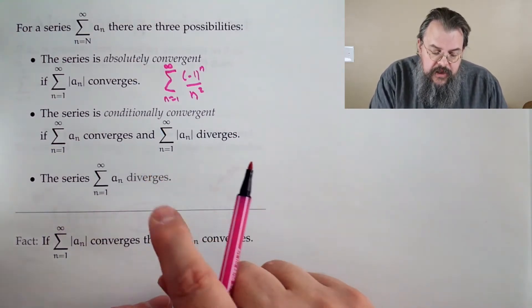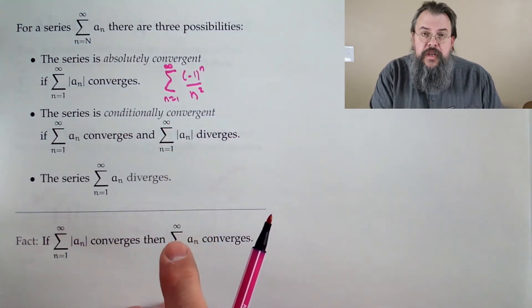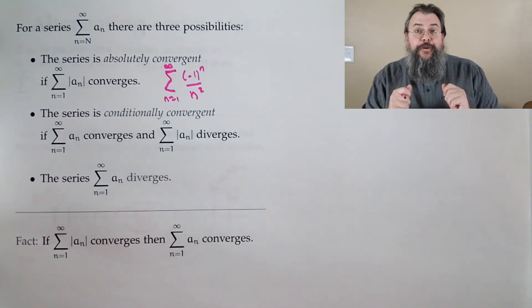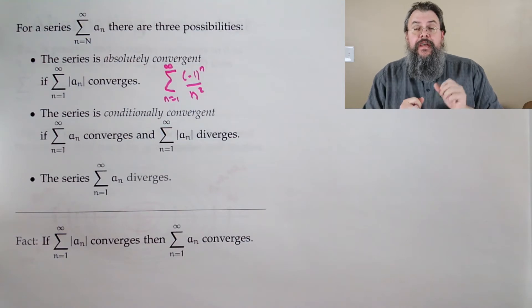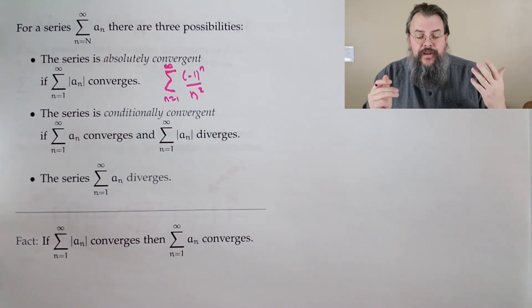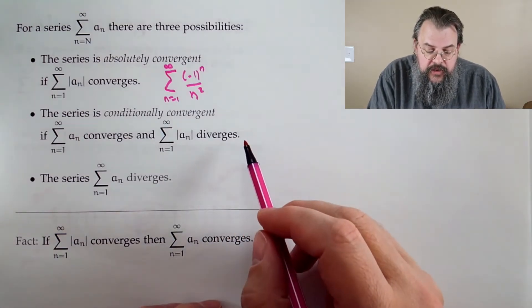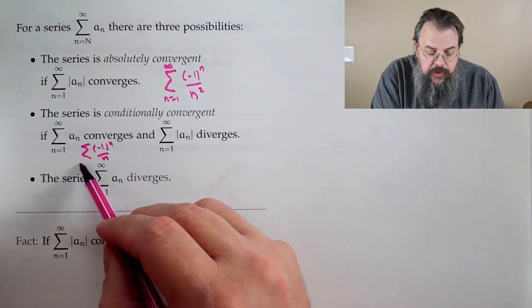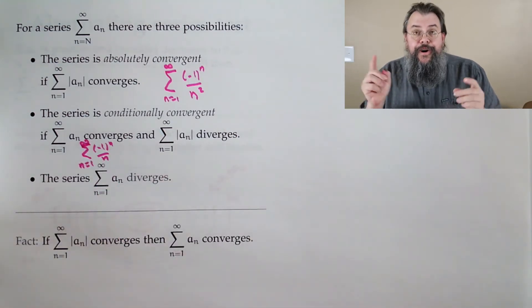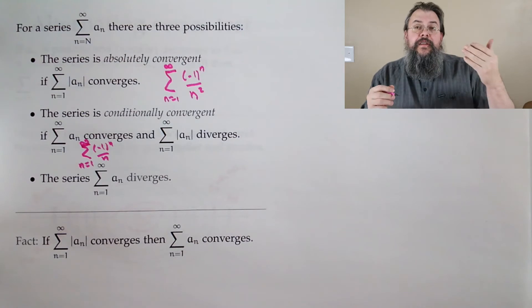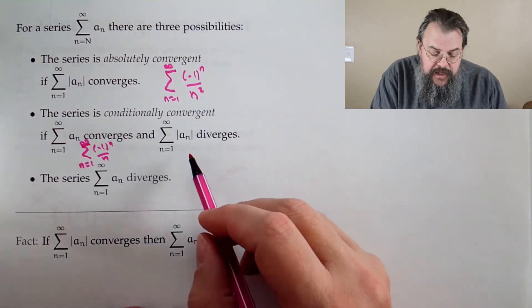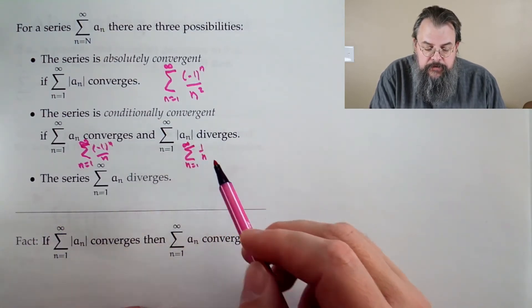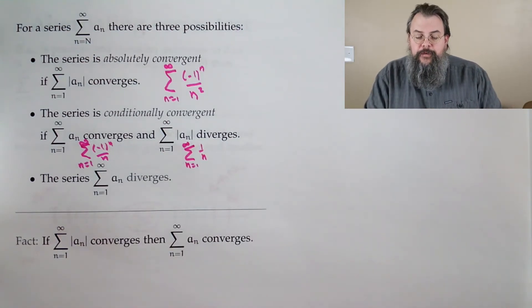Now, by comparison, we say something is conditionally convergent if the sum a_n converges, but the sum of the absolute value of a_n diverges. In other words, you need the minus. If you don't have that minus sign, it ruins it. We also have examples of this. So, think about it this way. We know that the sum of (-1)^n over n will converge. Why? Alternating series test. That (-1)^n makes it alternate. The 1 over n goes to 0. But, if we take away the (-1)^n, then we get just the sum of 1 over n. Forget it. That will diverge.